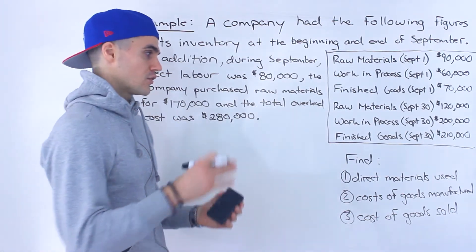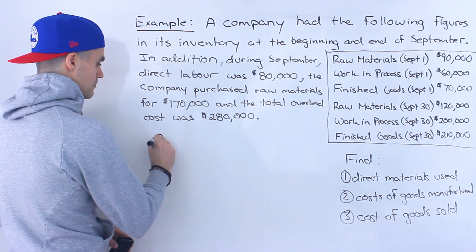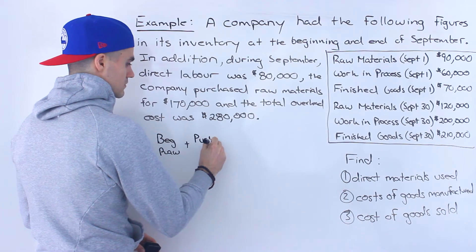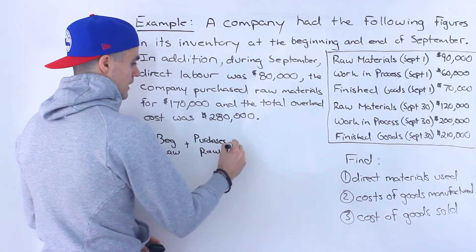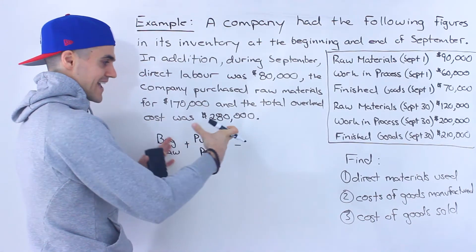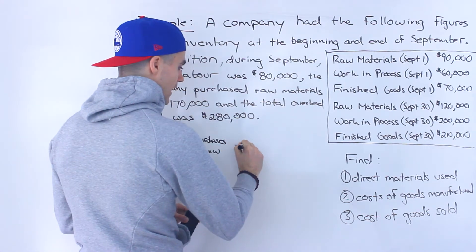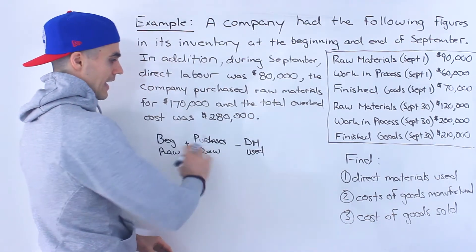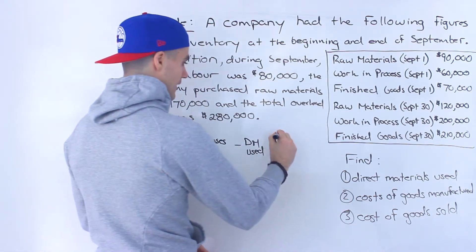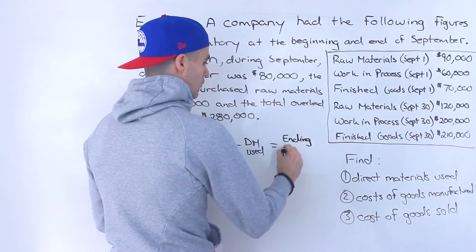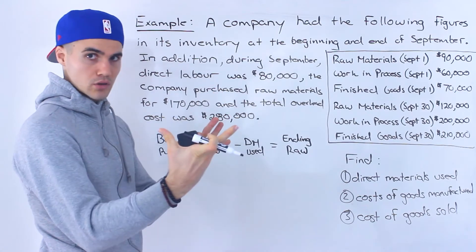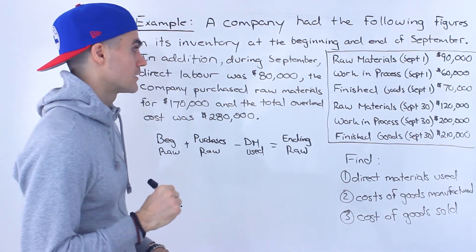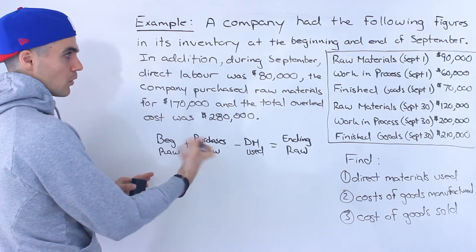These figures come right out of that flow chart. The first line in the flow chart is basically beginning raw materials plus purchases of raw materials, and from that we take raw materials and put them into production — we call that direct materials used. That's what we're solving for in number one. Then we'll have some raw materials left over at the end of the period, which is the ending raw materials. In this question the period is the month of September, so sometimes you're looking at a full year, sometimes just a single month or a quarter — in this case just a single month.